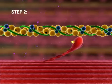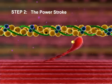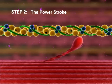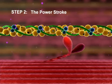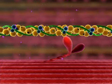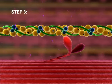Step 2: The Power Stroke. ADP is released and the activated myosin head pivots, sliding the thin myofilament toward the center of the sarcomere.